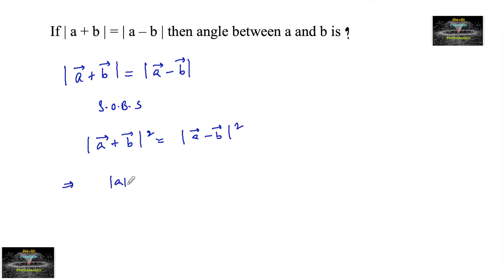Which implies |a|² + |b|² + 2(a·b) = |a|² + |b|² - 2(a·b). |a|² and |b|² on both sides cancel, so we get 4(a·b) = 0, which implies a·b = 0.